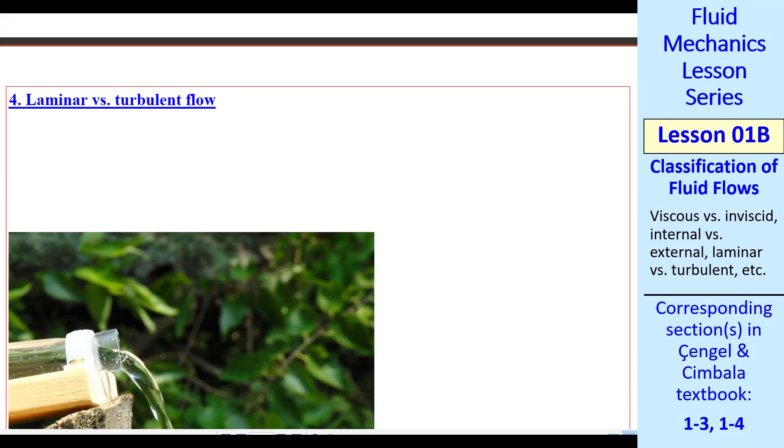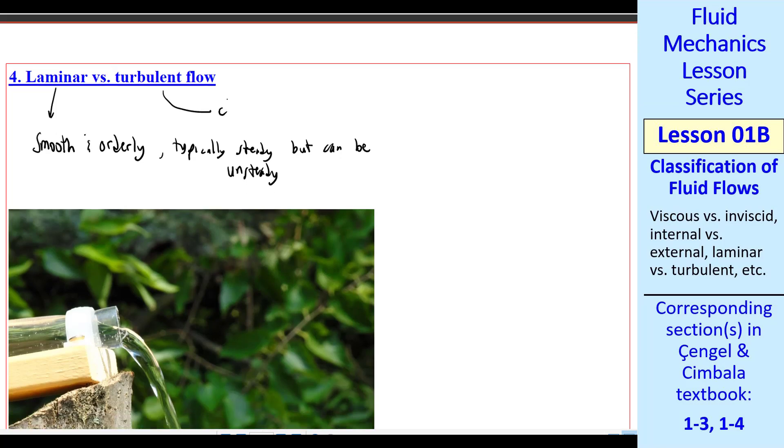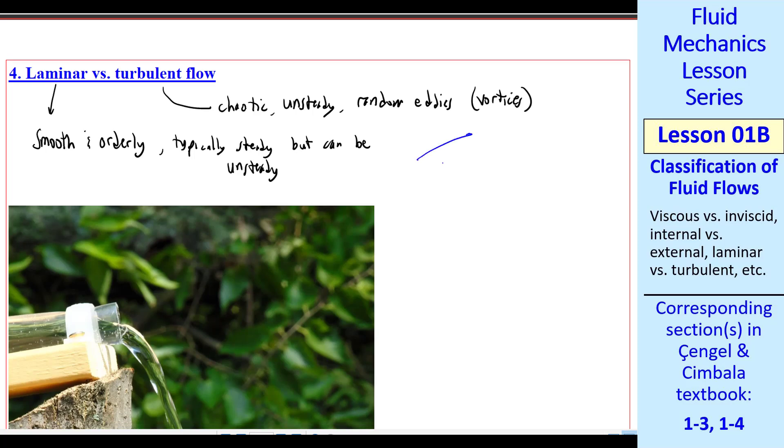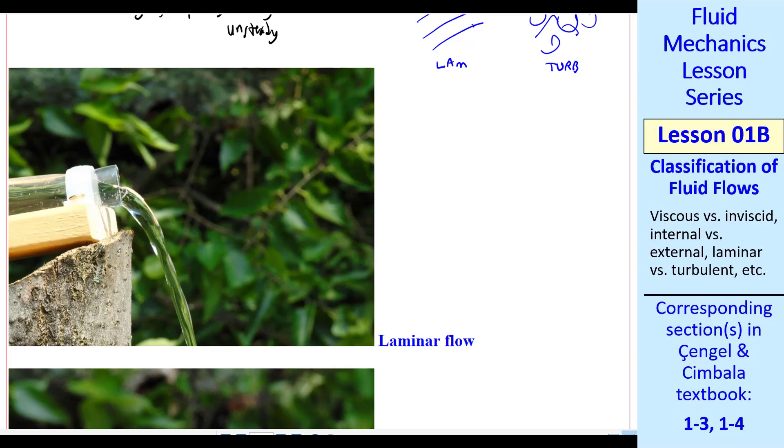Okay, moving on, let's talk about laminar versus turbulent flow. Laminar, the very word is from lamina, which means smooth and orderly, like a laminate. Typically steady, but it can be unsteady as long as it's smooth and orderly. Whereas turbulent flow is chaotic, it's always unsteady. And there's random eddies or vortices in the flow. So a laminar flow might look like this. You have this nice flow, whereas a turbulent flow would have all these eddies moving around and it's unsteady and chaotic.